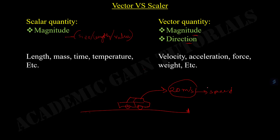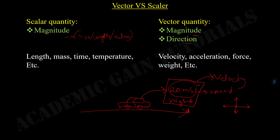But we don't know whether the car is moving to the right, to the left, upward, or downward. If we add the information that the car is moving to the right at the speed of 20 meters per second, then this piece of information is known as velocity. This needs two pieces of information: one is magnitude (20 meters per second) and another is direction. So this is known as a vector quantity.